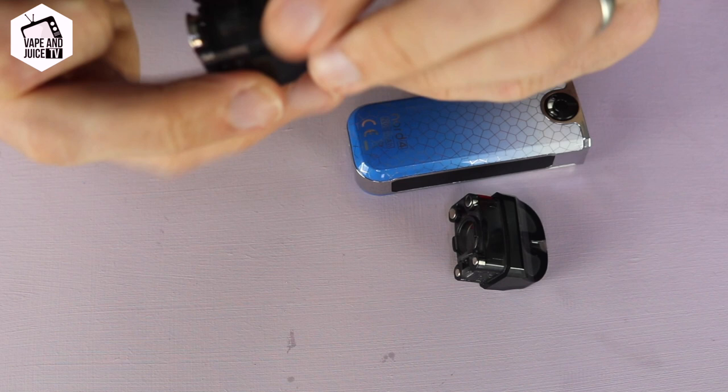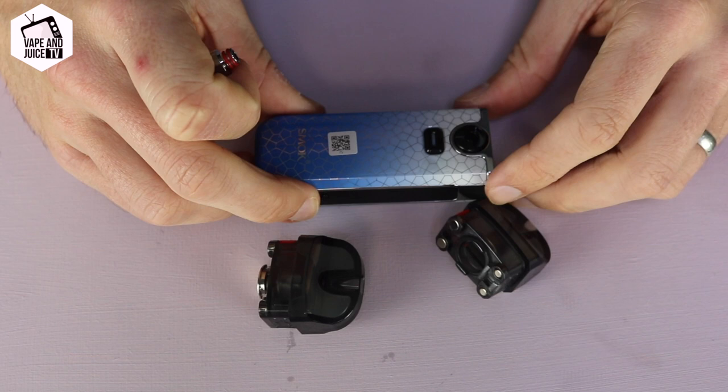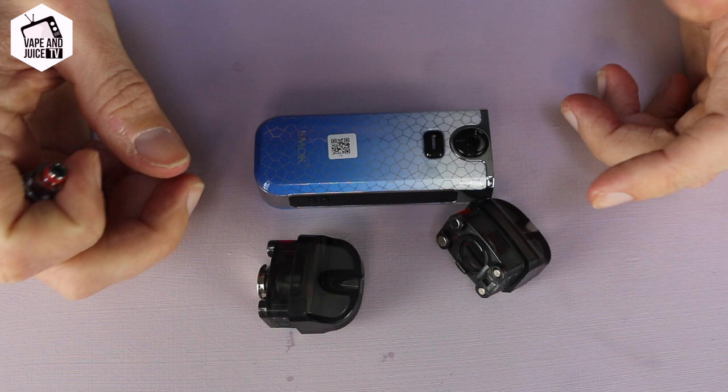Here we've got the Smok Nord 4, and you've got what essentially is made up of a tank pod and a little coil in the base. Now people often ask me when do I change the coil, and the answer is when it tastes bad, when it starts to taste a bit burnt, or when it becomes harder to inhale. Fresh coils are a lot easier to inhale.